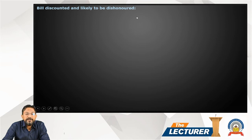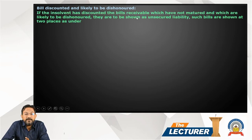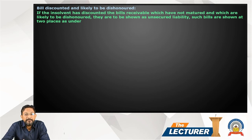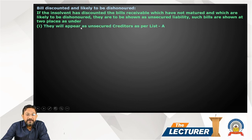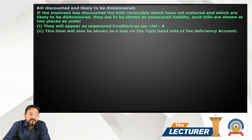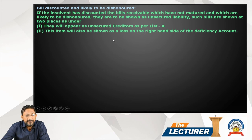If the insolvent has discounted bills which have not matured and which are likely to be dishonored, they are to be shown as an unsecured liability, and such bills are shown at two places. First, they will appear as unsecured creditors per List A. Second, this item will also be shown as a loss on the right-hand side of the deficiency account, as it is a reduction in capital.